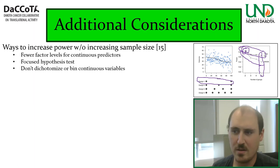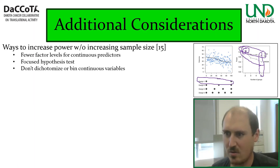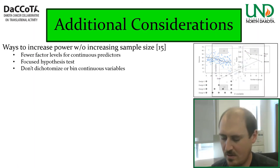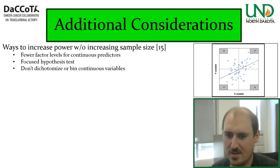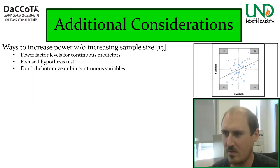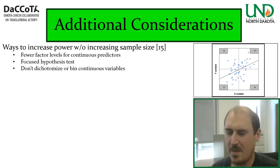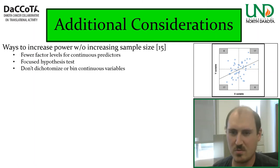Another thing you can do is not dichotomize or bin continuous variables. For example, in a linear regression across X and Y, if you split the data into four different quadrants and perform a chi-square test, it actually stops being significant when you dichotomize it — even though the continuous linear regression showed a real relationship.